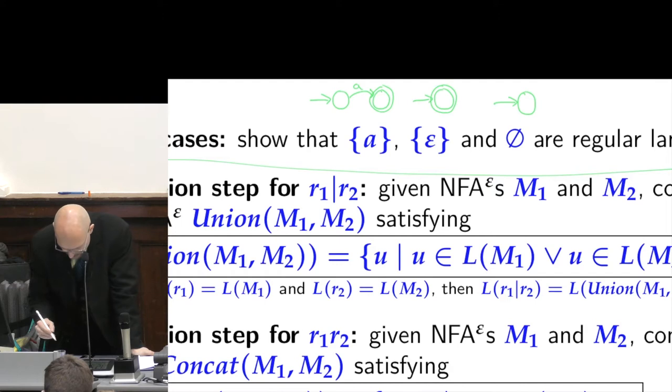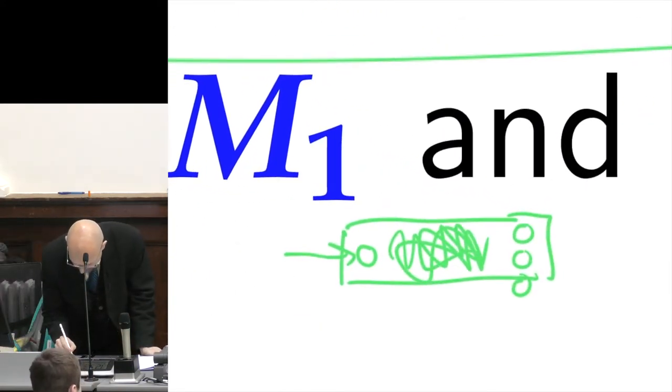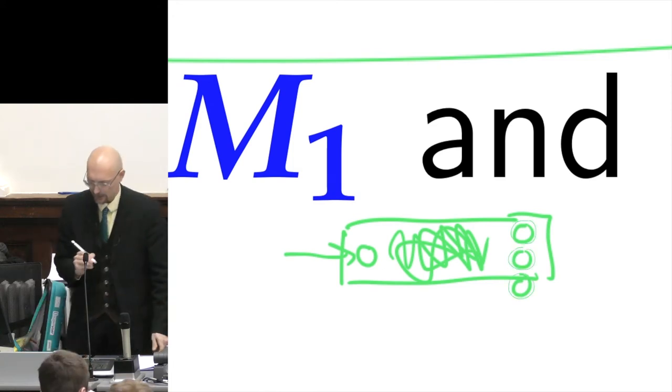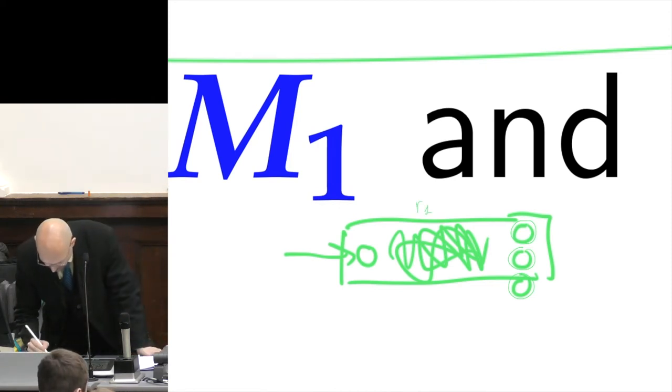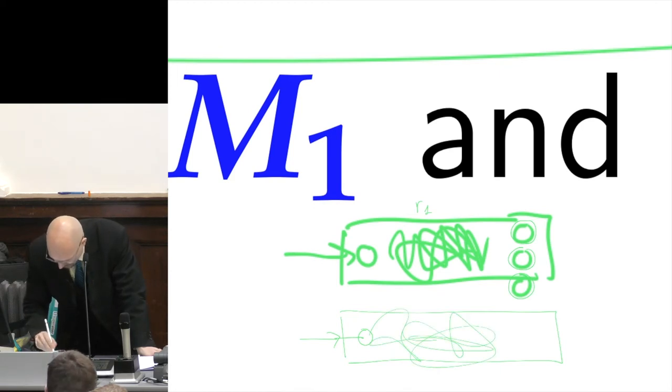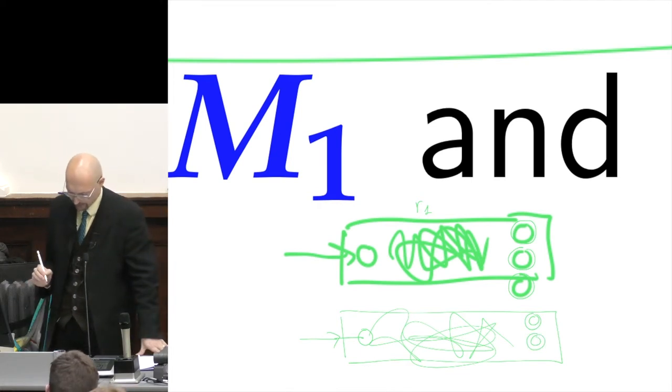For the union, I will have a machine here that recognizes R1, which is going to have some kind of starting state, then a bunch of things that happen inside, and then it's going to have some accepting states somewhere at the end, which are going to have a double circle like this, and that's the one recognizing R1. There's going to be another one recognizing R2, it's going to have some initial state, some bunch of things that happen and states and so on, and then some accepting states conveniently placed on the right part of the diagram.